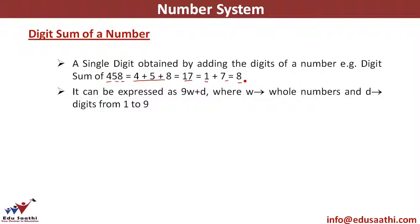Now if I look at the digit sum, it can always be expressed as 9w plus d, where w represents whole numbers and d represents digits from 1 to 9. When divided by 9, it can be represented as 9 into a whole number plus a digit. This digit is basically the remainder with 9.